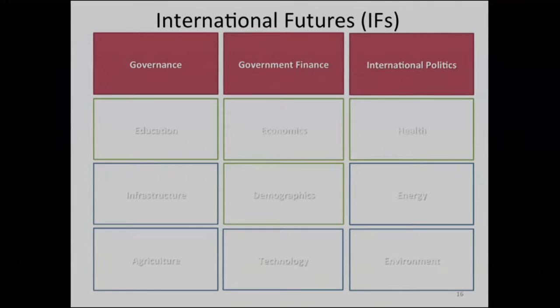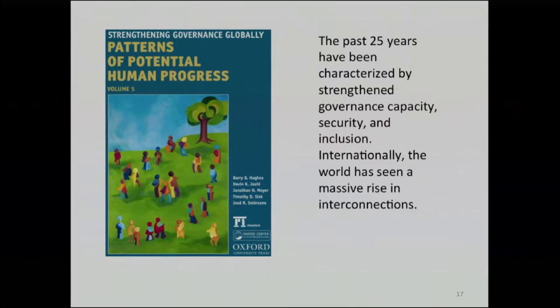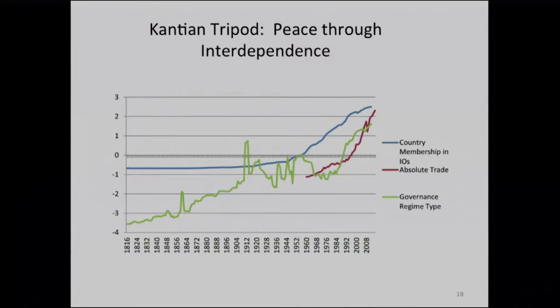The last big system I'll focus on is the social system — the way we organize ourselves domestically and internationally. The question I'm trying to unpack is whether global interdependence is on the decline and what the potential implications of changing interdependence relationships across countries might be. This is a poorly understood space in the sense that producing a long-term forecast of governance levels across time isn't something many people are invested in, because there's so much contingency in systems like this.